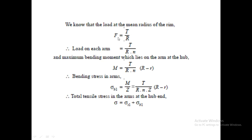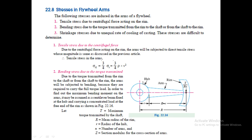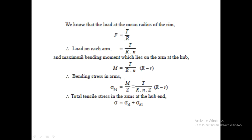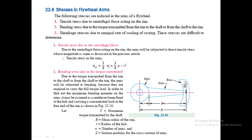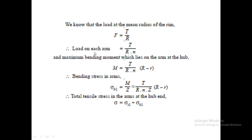For the bending stress in the arms, the load at the mean radius R of the rim is T/R, where T is the torque. The load on each individual arm is T/(R·n). The arm is treated as a cantilever beam with the hub as the fixed edge and the rim as the free end where the load acts. The perpendicular distance from the load to the hub edge is (R − r), where r is the radius of the hub.